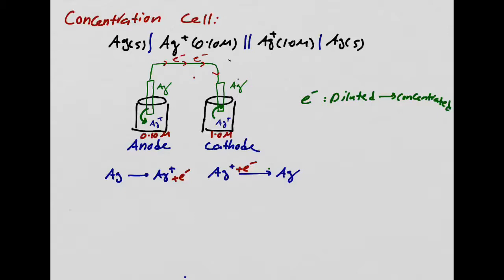This is a concentration cell. The application is relevant to biology majors — in biology you have cell membrane potential. There is an e-cell across the cell membrane, and that is exactly the same idea. There's a concentration difference driving how things move around in our cells — that is the cell membrane potential.